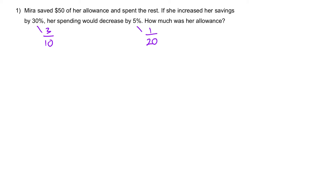Let us focus on the second sentence and ignore the percentage for the moment. If she increased her savings, think about it — the only way she can increase her savings, the additional amount of money must come from somewhere. It must come from the spending.